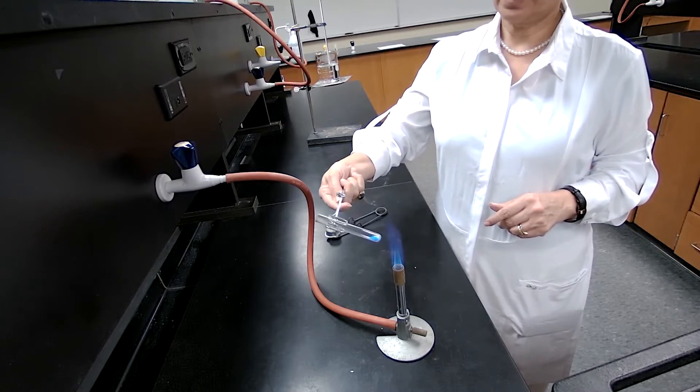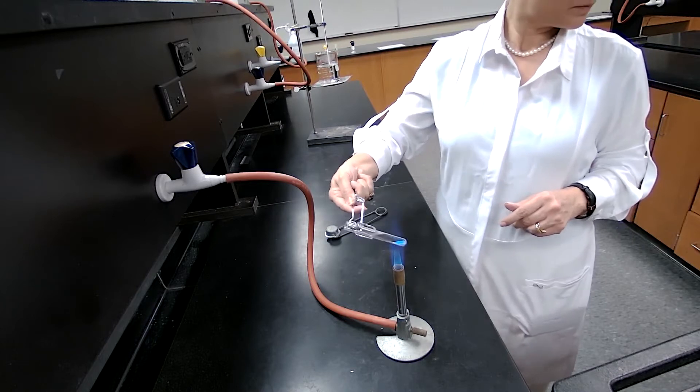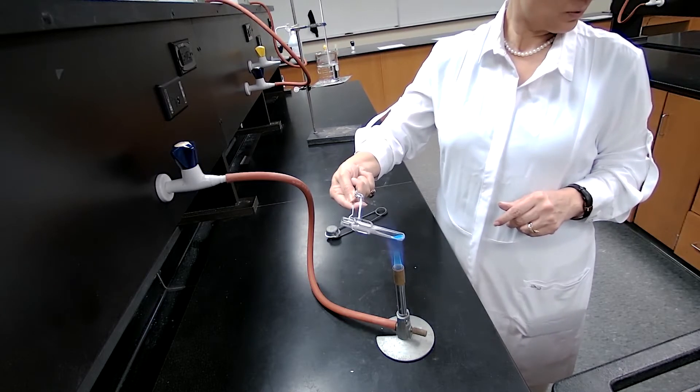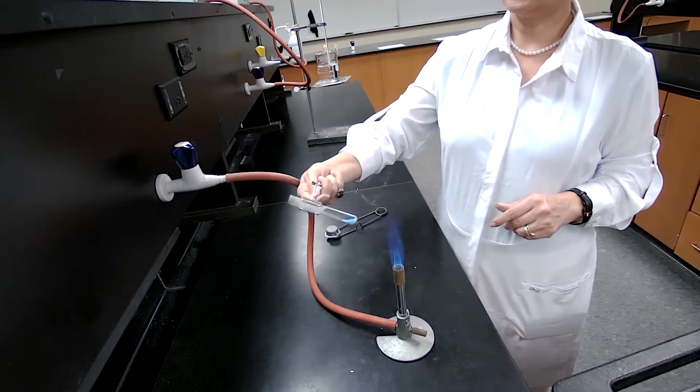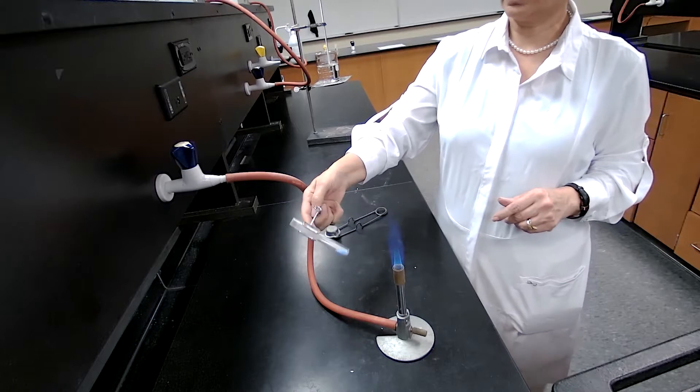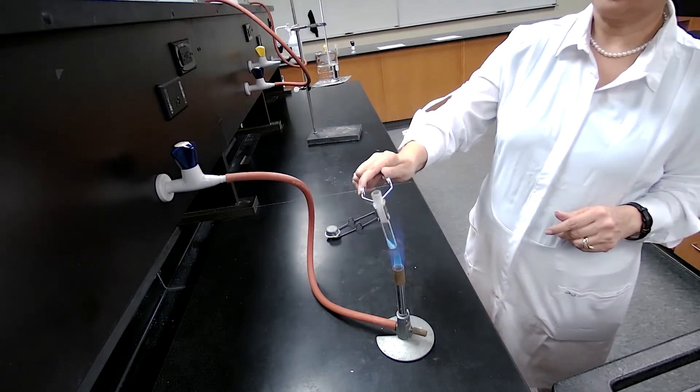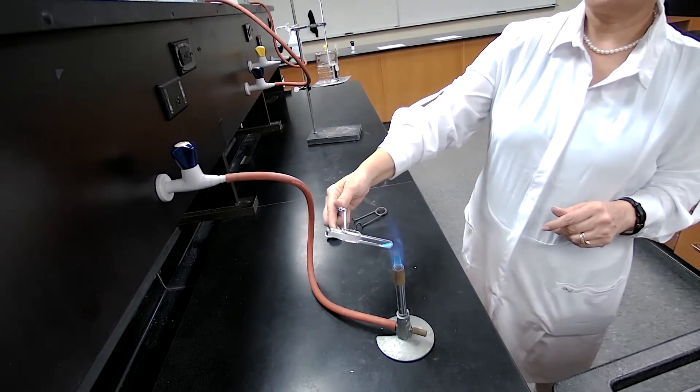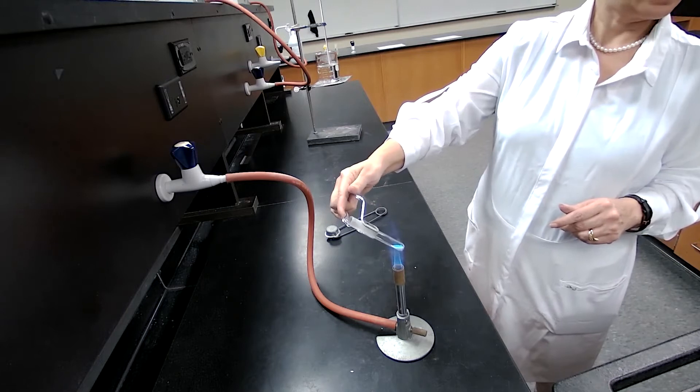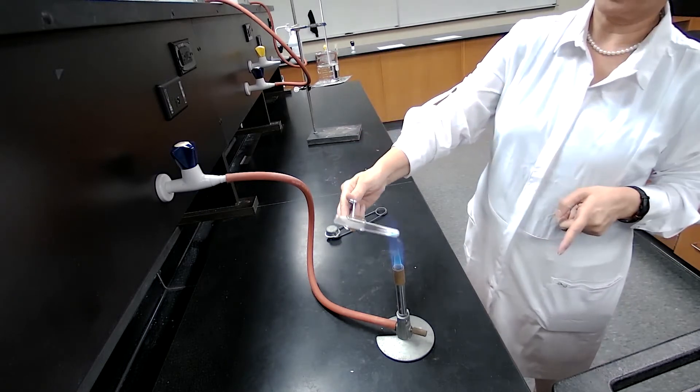For the purpose of experiment two, part three, we are heating the copper sulfate, hydrated copper sulfate, until it changes color. Basically it's going to lose the water of hydration. And as it loses the water of hydration, we see that water vapor is coming out of the end of the test tube.